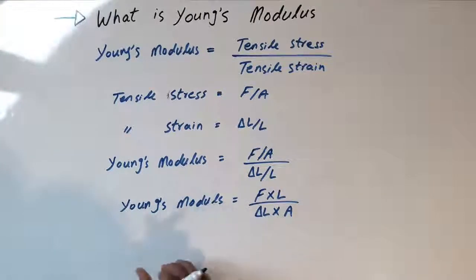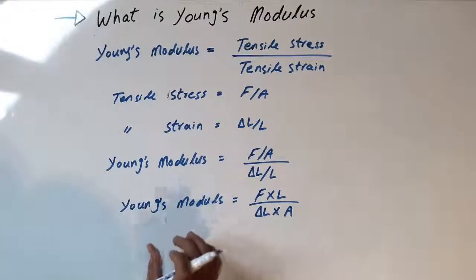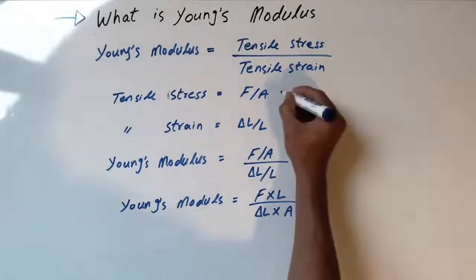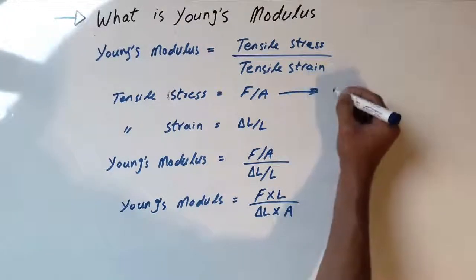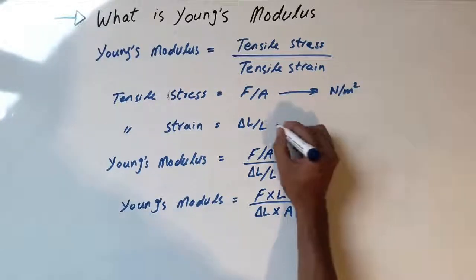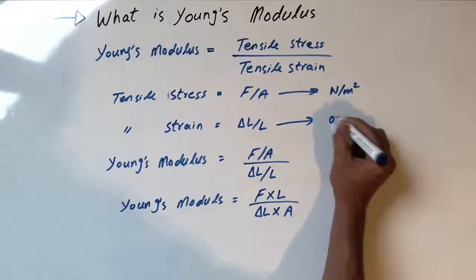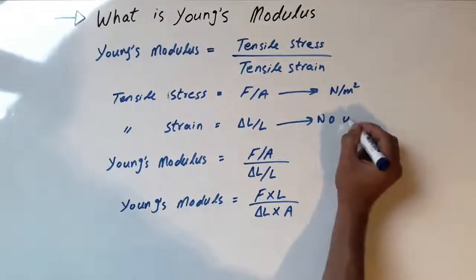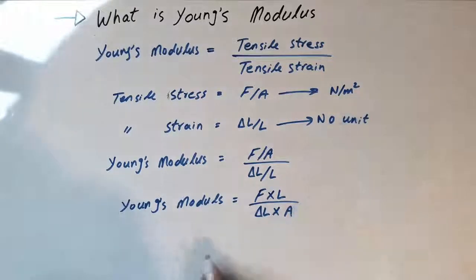Now the final thing, the main important thing: what is the unit of Young's Modulus? We have tensile stress in Newtons per meter squared, and tensile strain has no unit, so the unit for Young's Modulus would be Newtons per meter squared.